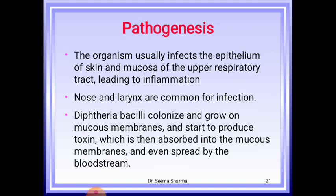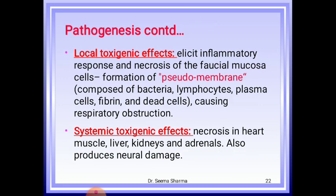Pathogenesis: the organism usually infects the epithelium of skin and mucosa of the upper respiratory tract, leading to inflammation. Diphtheria bacilli colonize and grow on mucous membranes and start to produce toxin, which is then absorbed into the mucous membranes and spreads by bloodstream. Local toxigenic effects elicit inflammatory response and necrosis of mucosal cells, leading to formation of pseudomembrane, which is composed of bacteria, lymphocytes, plasma cells, fibrin, and dead cells, causing respiratory obstruction. Systemic toxigenic effects cause necrosis in heart muscle, liver, kidney, and adrenal glands, and produce neural damage.